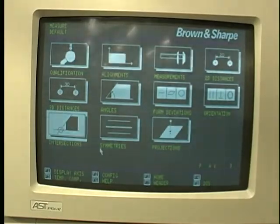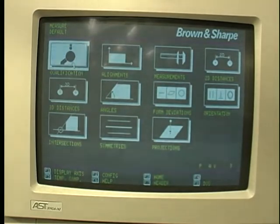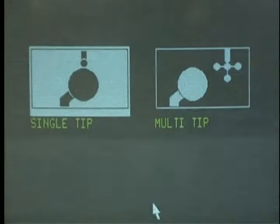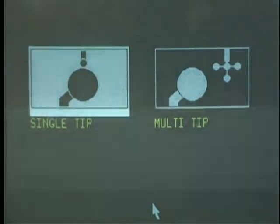To begin, use the mouse to move the arrow over the qualification icon. The icon highlights to indicate it will be selected when clicked. The qualification page is displayed. The screen offers a choice of single tip or a multi tip. Since this probe has only one tip, single tip is selected.